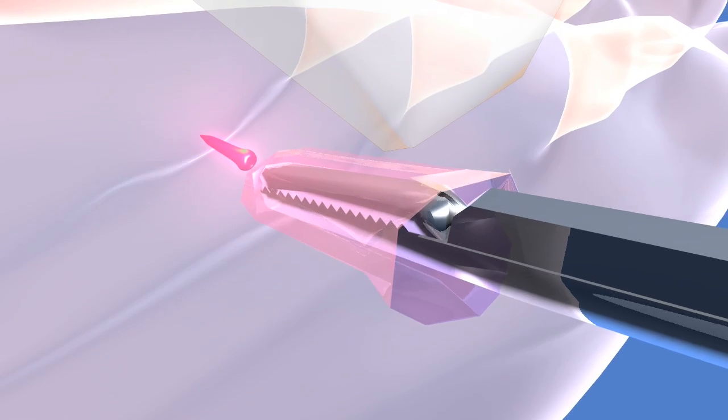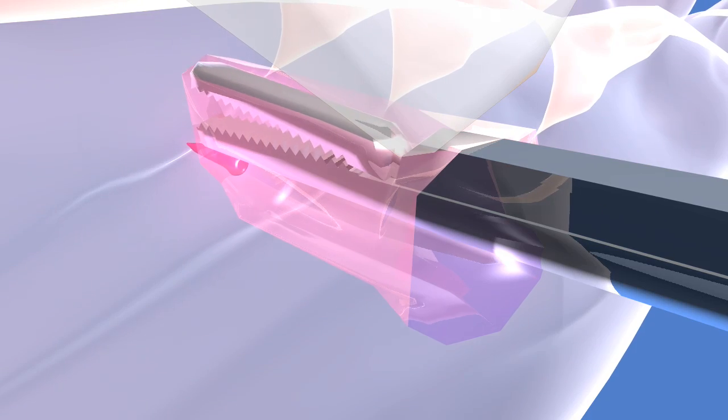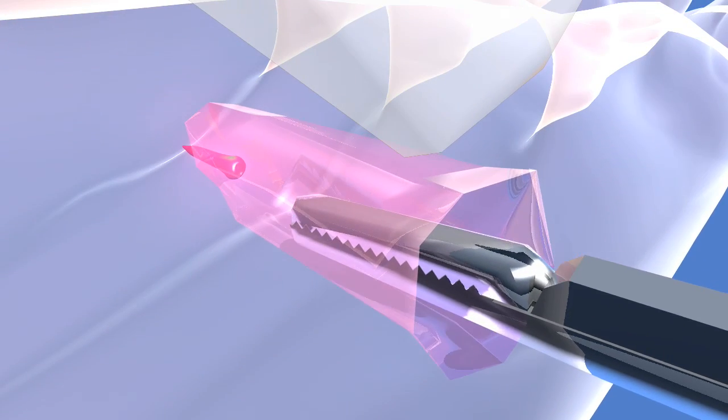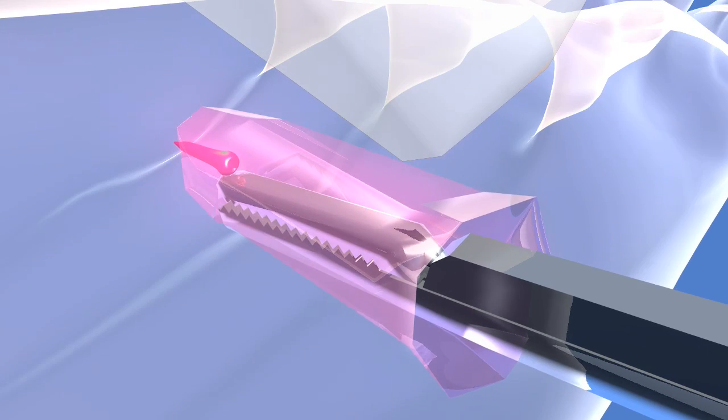Blunt tip forceps are introduced and with blunt dissection a pocket is formed, with the forceps entering the subcutaneous pocket with blunt dissection above and below the foreign body.